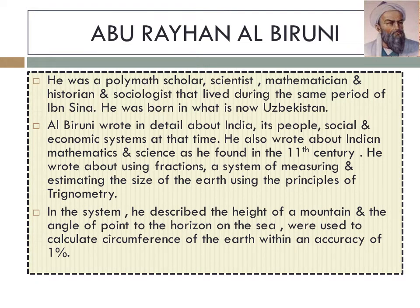Abu Rayyan al-Biruni was a polymath — scholar, scientist, mathematician, historian, and social artist — who lived during the same time as Ibn Sina. He was born in what is now called Uzbekistan, in the central region of Asia. Al-Biruni wrote in detail about India, its people, and the social and economic systems of that time. He also wrote about Indian mathematics and science as he found them in the 11th century, including the use of fractions and a system of measuring and estimating the size of the earth using the principles of trigonometry.